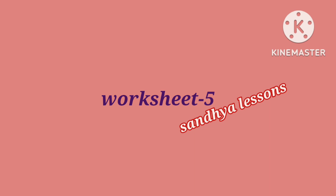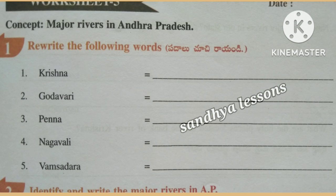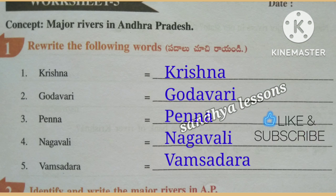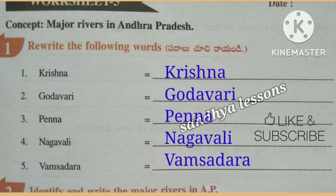Worksheet 5. First, rewrite the following words: Krishna, Godavari, Penna, Nagavali, Vamsadara.